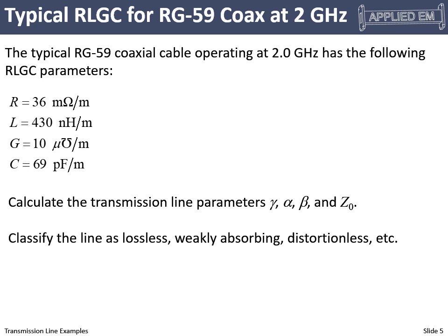Now for an RG-59 coax, here are the typical parameters. To get those parameters, we need to do an electromagnetic analysis. This is something we're going to talk about later, but not now. So these numbers mysteriously appear and we have them. Given those fundamental parameters, let's calculate the complex propagation constant, attenuation coefficient, phase constant, characteristic impedance. And once we have those, now we can classify the line. Is it lossless? Is it weakly absorbing? Is it distortionless? So let's dive into that. We're given the fundamental parameters and we'd like to determine everything else. This will be at two gigahertz.